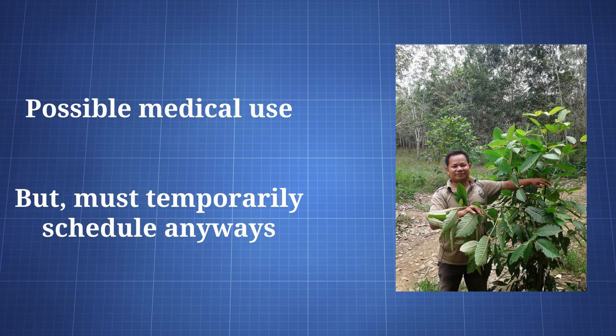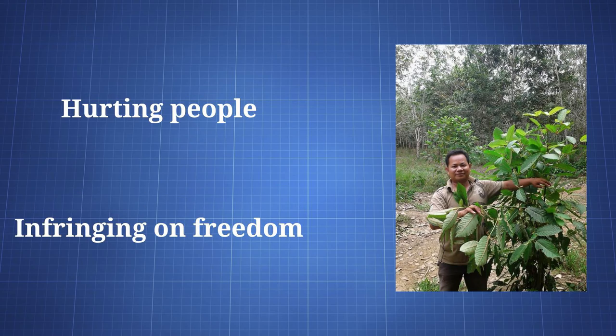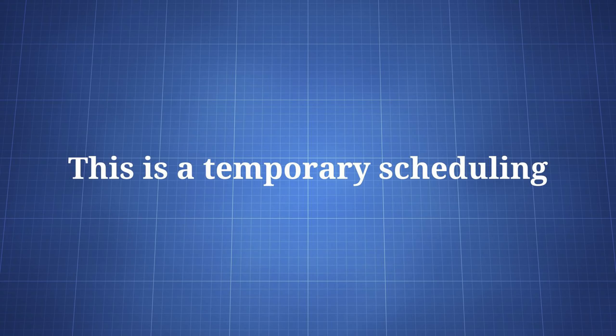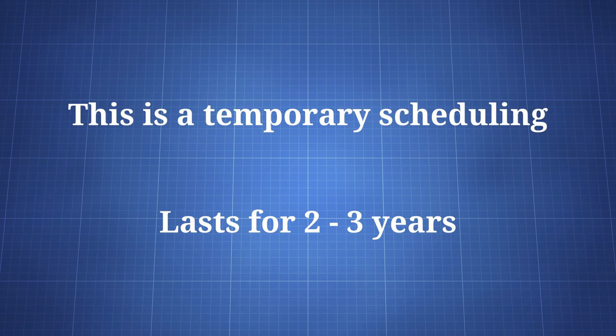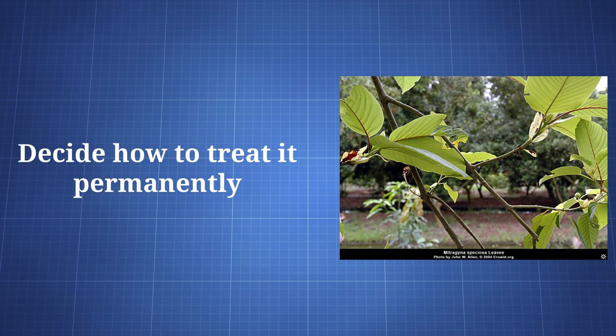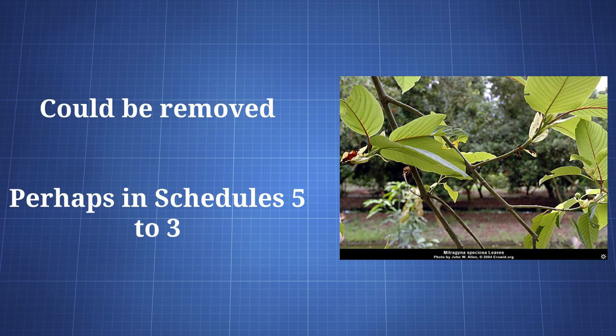The DEA says it recognizes there may be a medical use for it, but it is the agency's duty to at least temporarily place it in Schedule 1 until everything is sorted out. During that time, however, the government will hurt many people and further infringe on freedom. Since this is a temporary scheduling order, it lasts for 2 years and can be extended to 3 years. During this time, the authorities will further evaluate the drugs in question and see how they should be controlled. It could be removed from the controlled substances list, but the DEA seems to think it's more likely to be placed between Schedules 5 and 3.